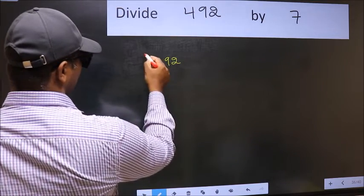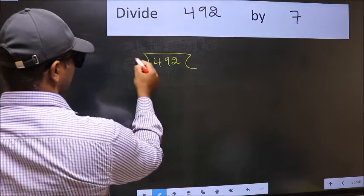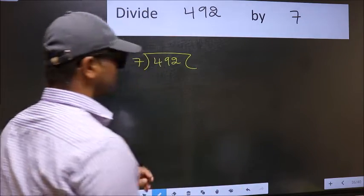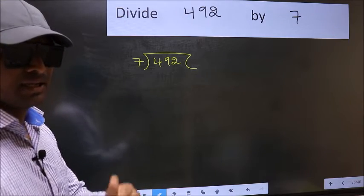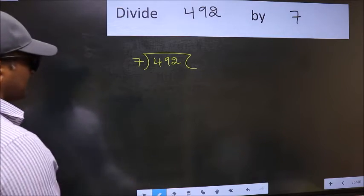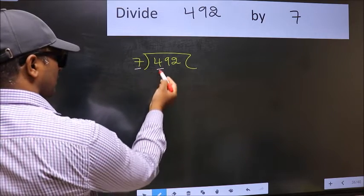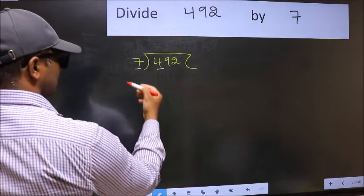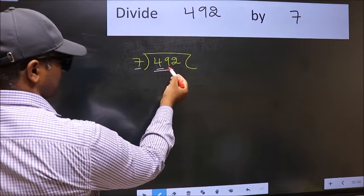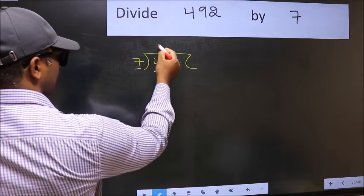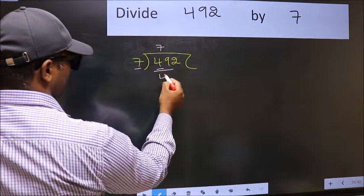492 and 7 here. This is your step 1. Next, here we have 4 and here 7. 4 is smaller than 7, so we should take two numbers, 49. When do we get 49 in 7 table? 7 sevens 49.